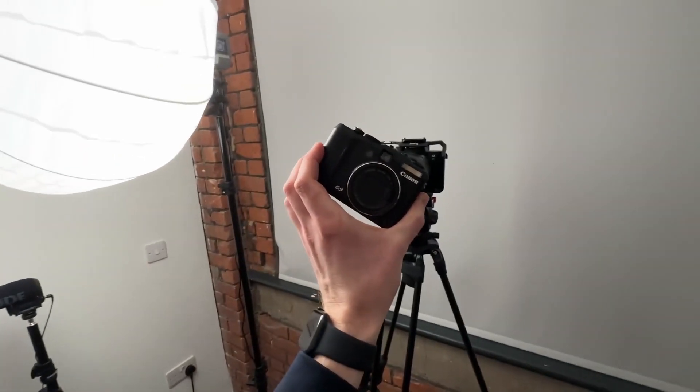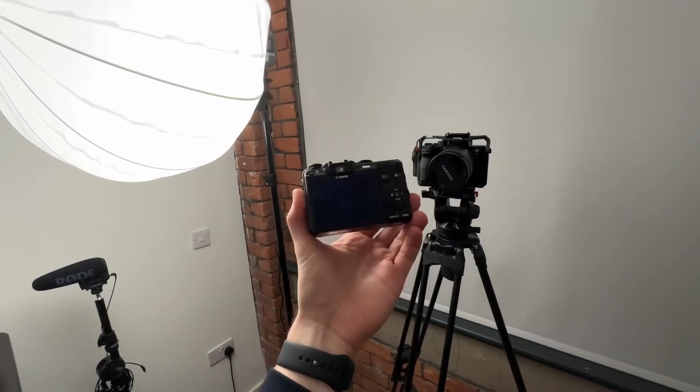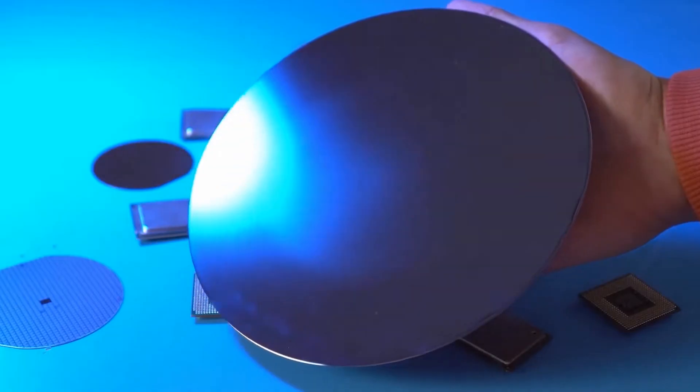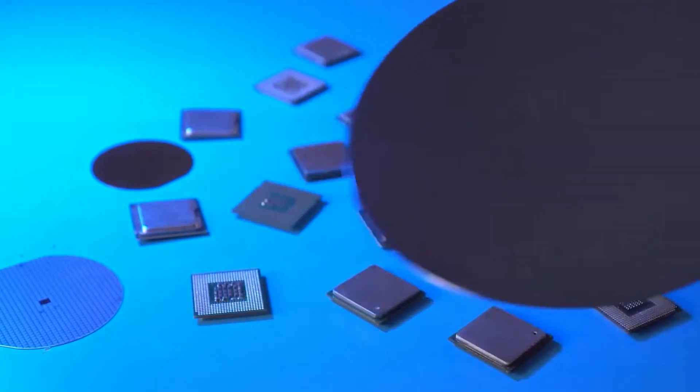Some stills cameras with in-body image stabilization offer pixel shift, which can be used to generate a high-resolution or true color file of native resolution. However, on-chip binning is still a better option.